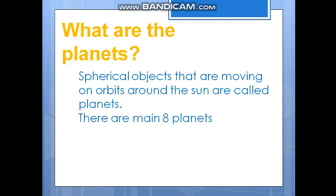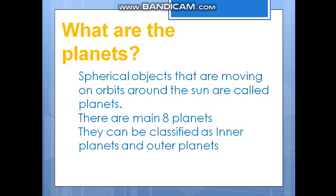There are eight main planets. Earlier there were nine planets, but in 2006, Pluto was considered a dwarf planet. Planets can be classified as inner planets and outer planets.